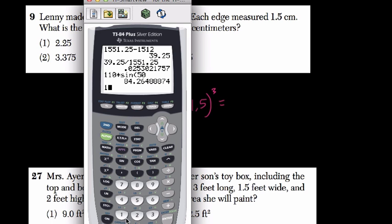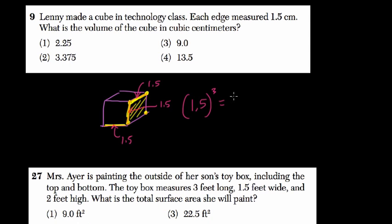So here, we answer 1.5 raised to the third power. That's 3.375. And here, that's choice 2.